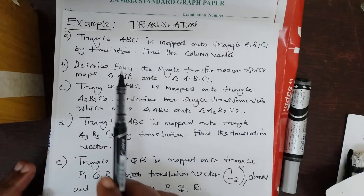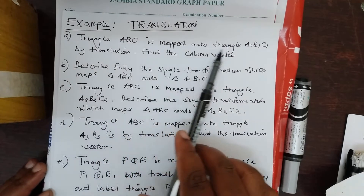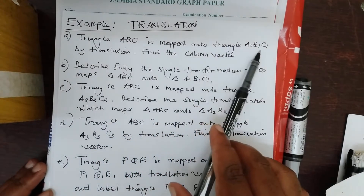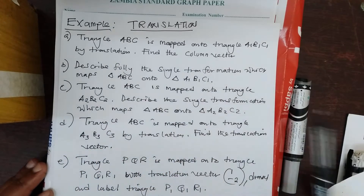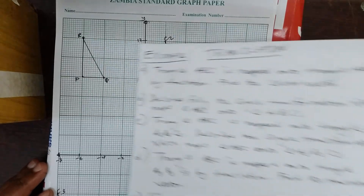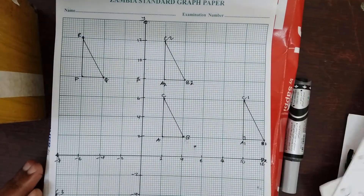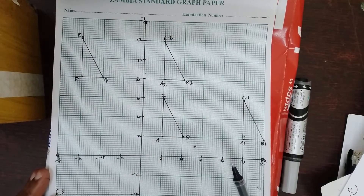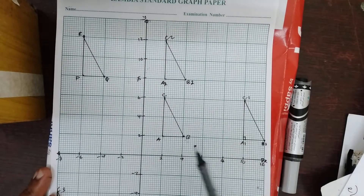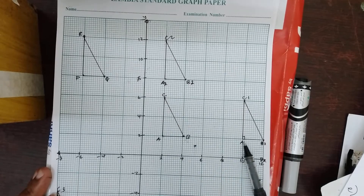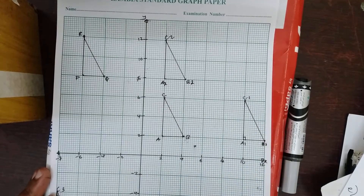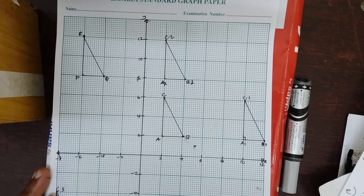We are saying triangle ABC is mapped onto triangle A1, B1, C1 by translation. Find the column vector. The triangle is here — you have triangle ABC that is mapped onto A1, B1, and C1. So let's find the translation vector.